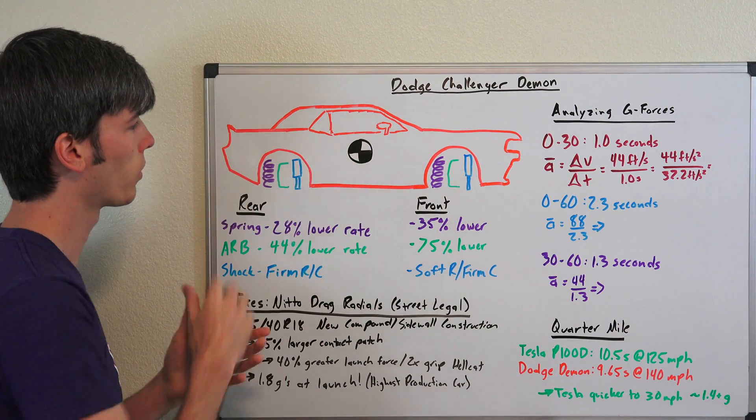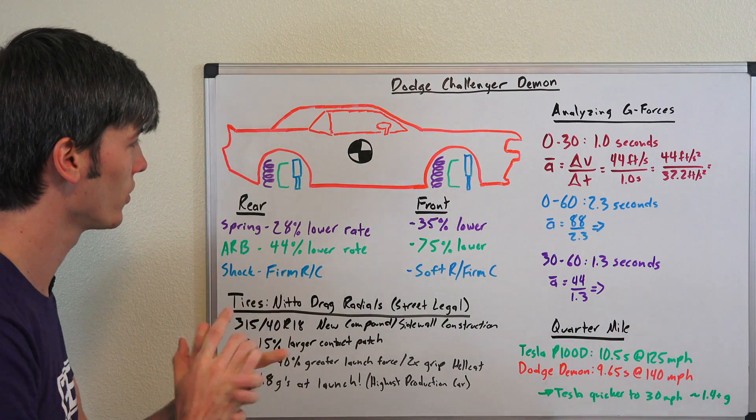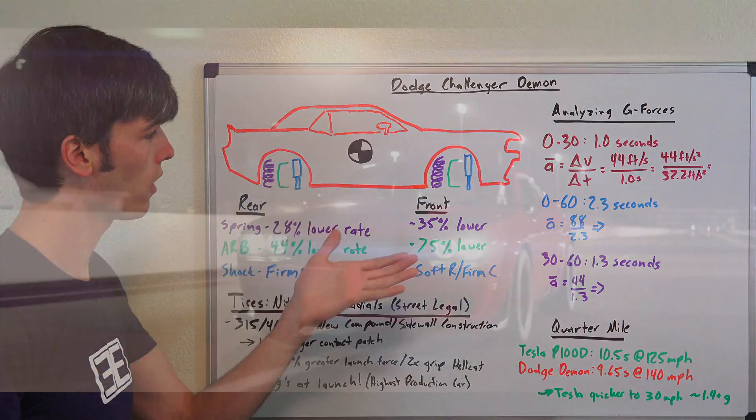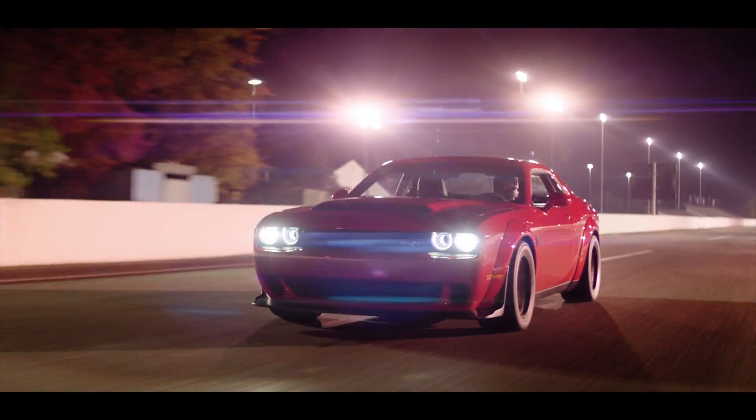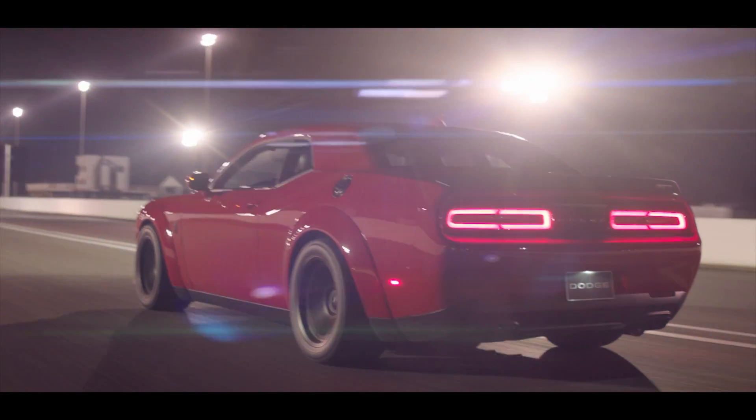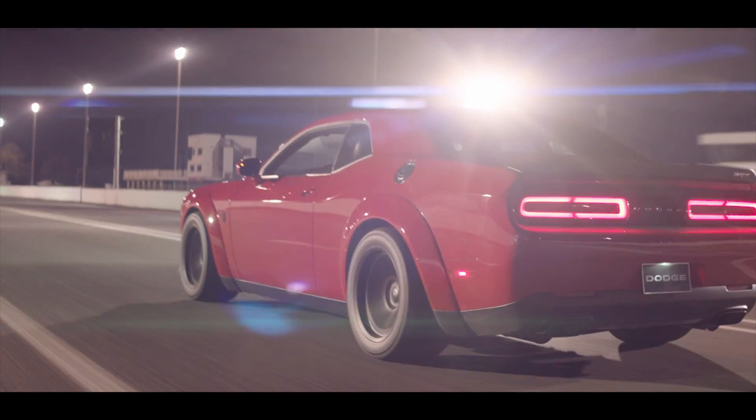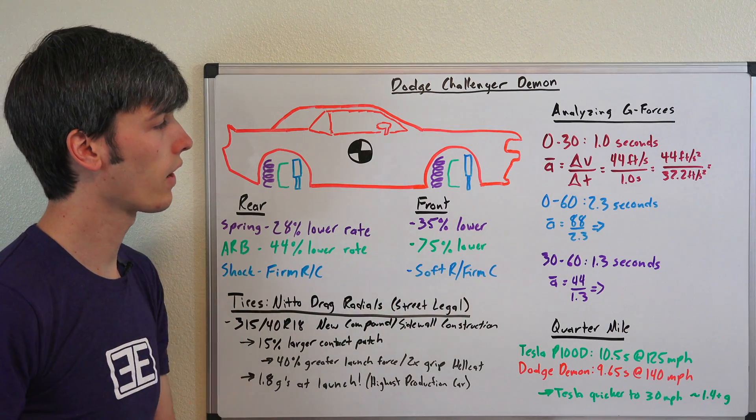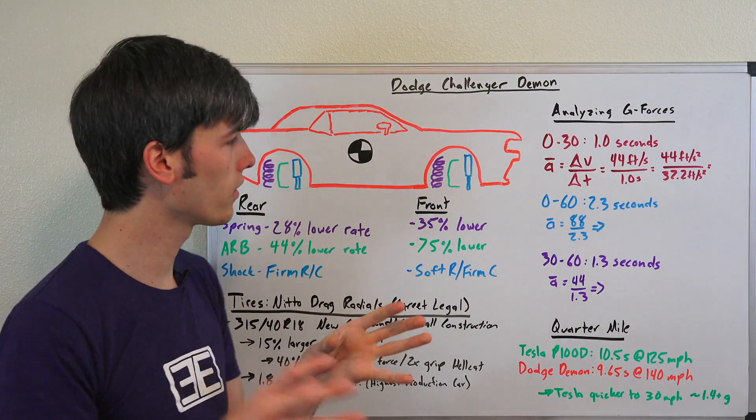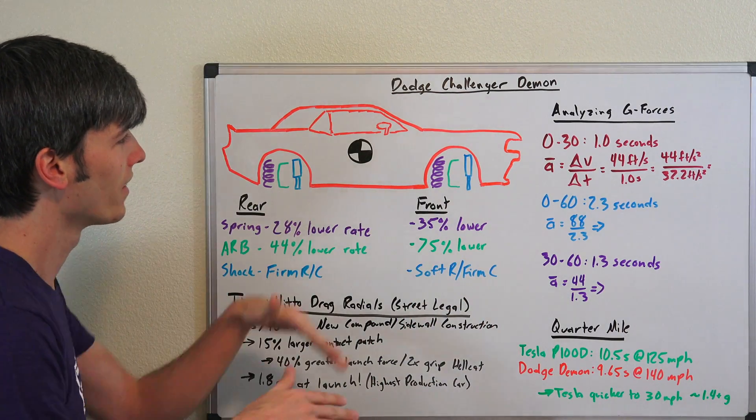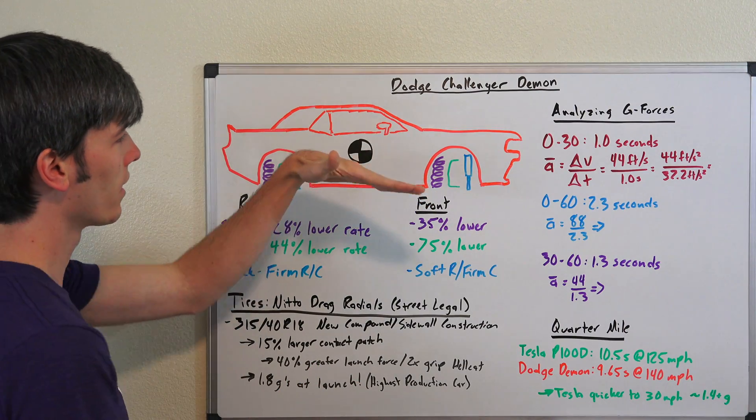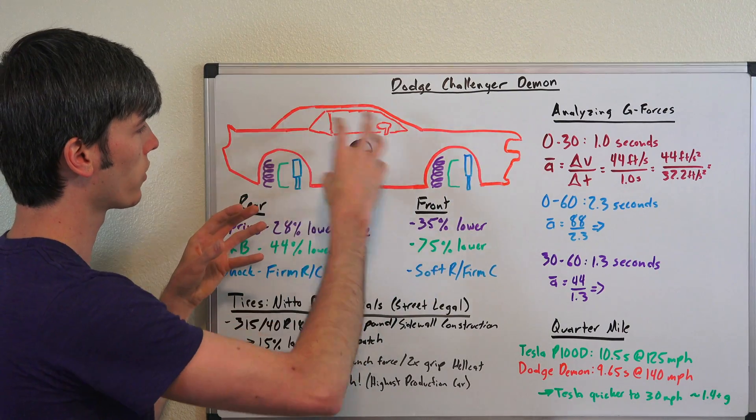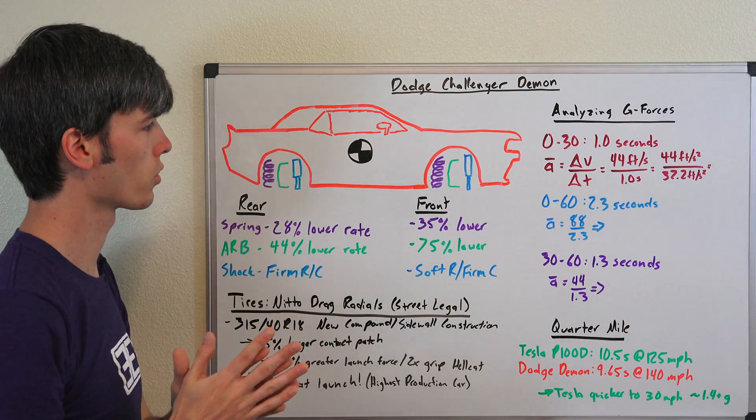So how do they get the weight to all rest on that rear tire? And they actually do do this, which is pretty cool. So what they've done versus the Hellcat, they've lowered the spring rates in the rear by 28%, lowered the spring rates in the front by 35%, lowered the anti-roll bar down 44% in the rear, down 75% in the front. And so what this does by lowering these spring rates is it allows the vehicle to arch back to kind of prop up as it launches and have that weight transfer occur to go towards those rear wheels.